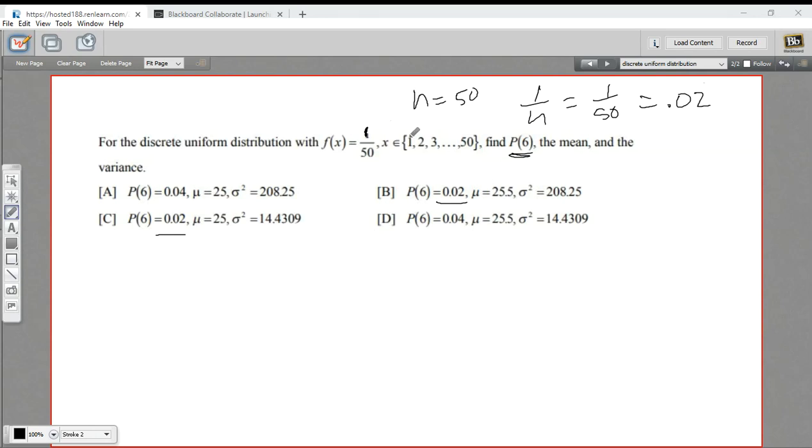How about the mean? Well, we're going to take the first value and the second value, add them together, and divide by 2. And that should be 25.5. And already we've got this narrowed down, but let's double-check the variance.